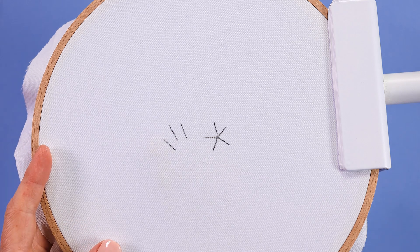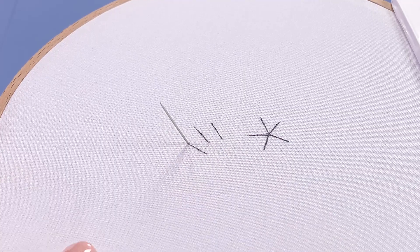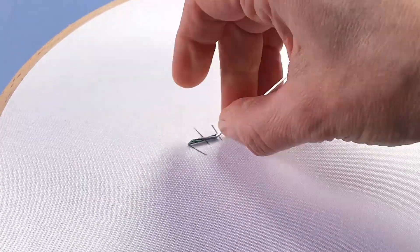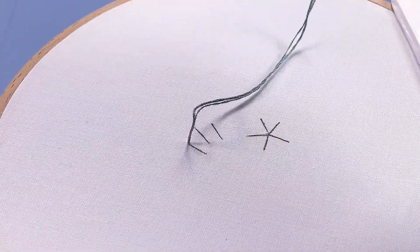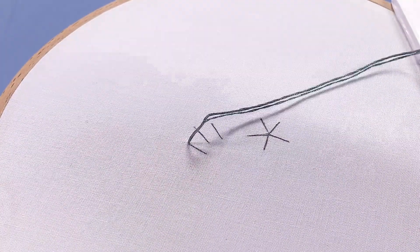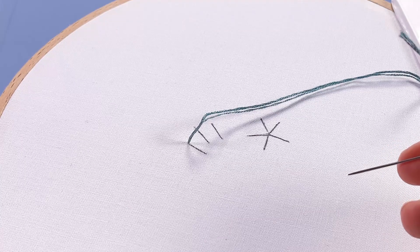Let's work some straight stitch. Bring your needle up at the starting point of your first stitch and pull through all of the working thread to the top side so that your knot's securing the thread at the back.